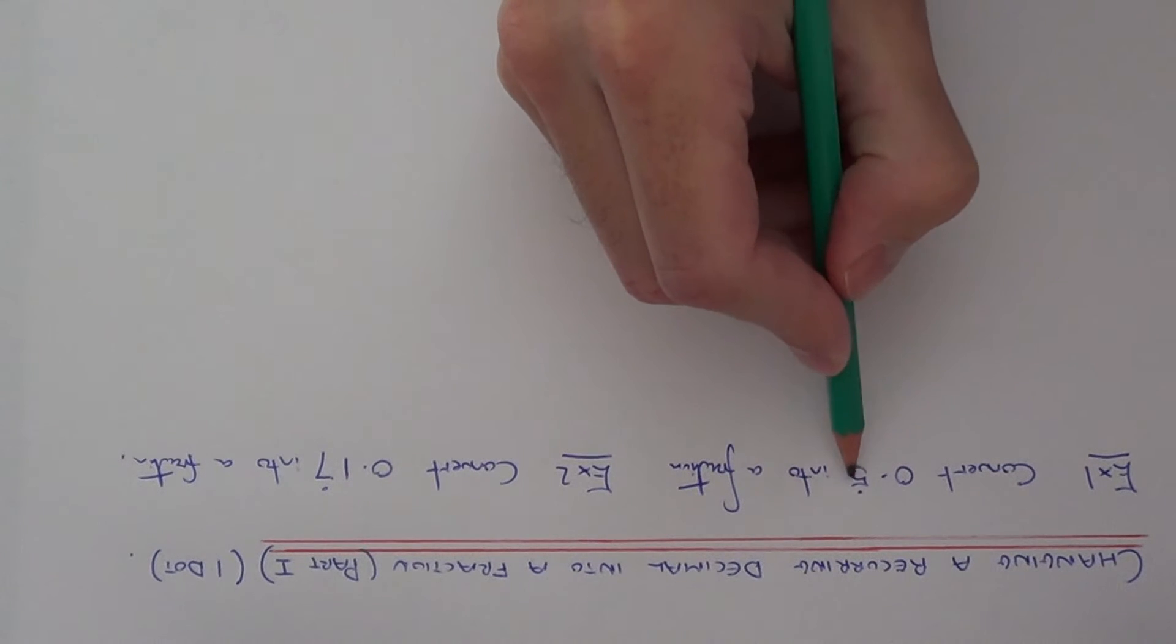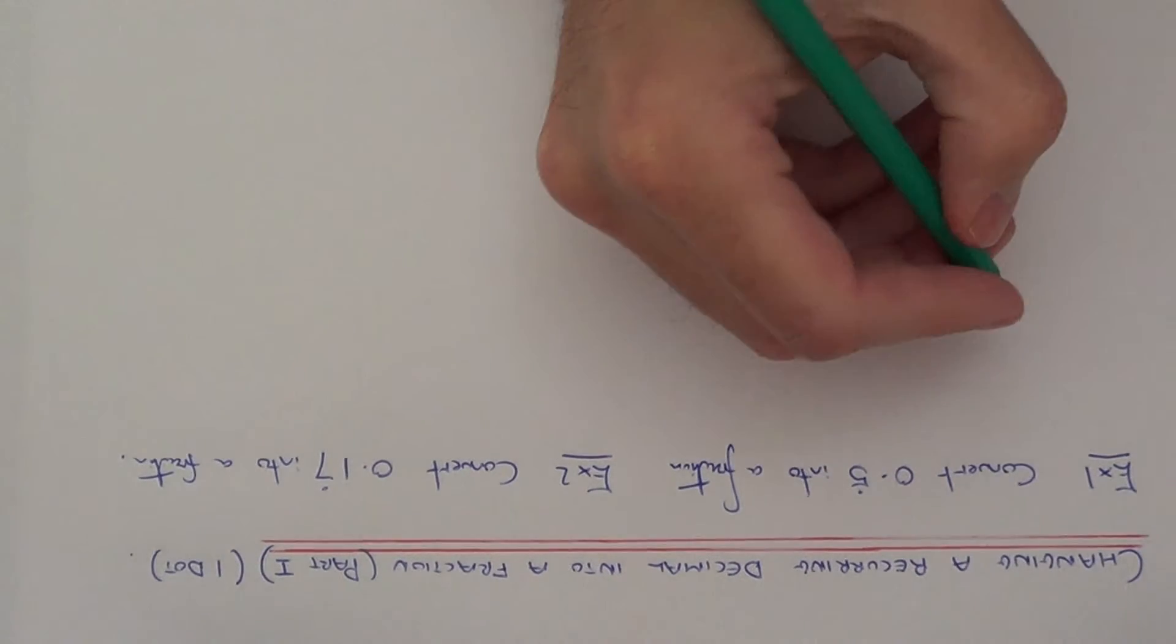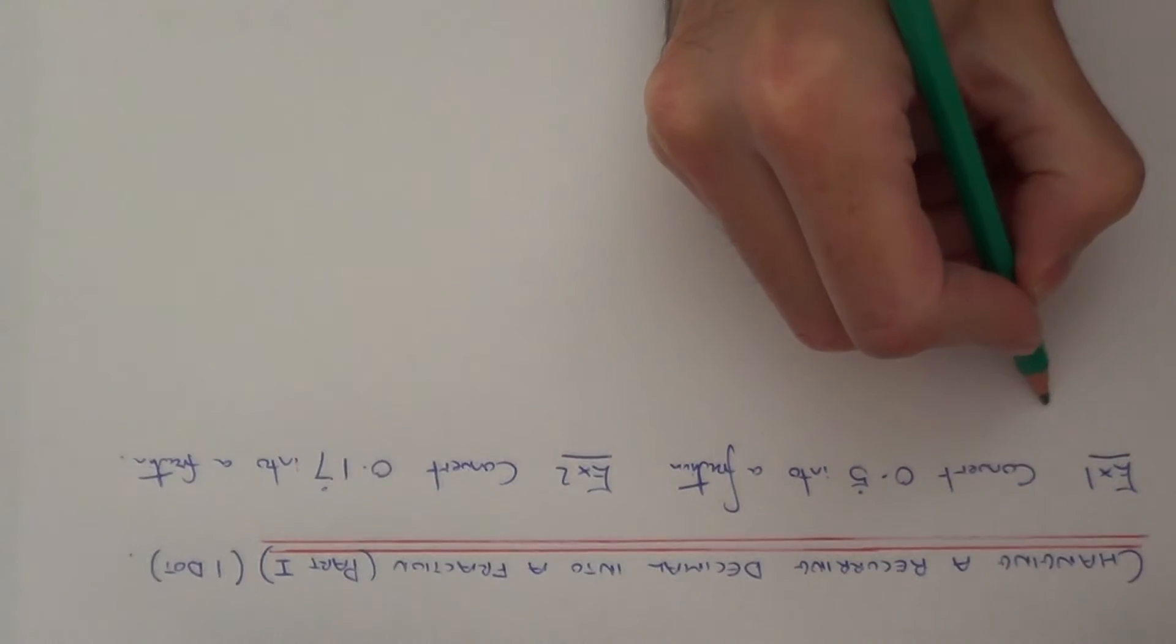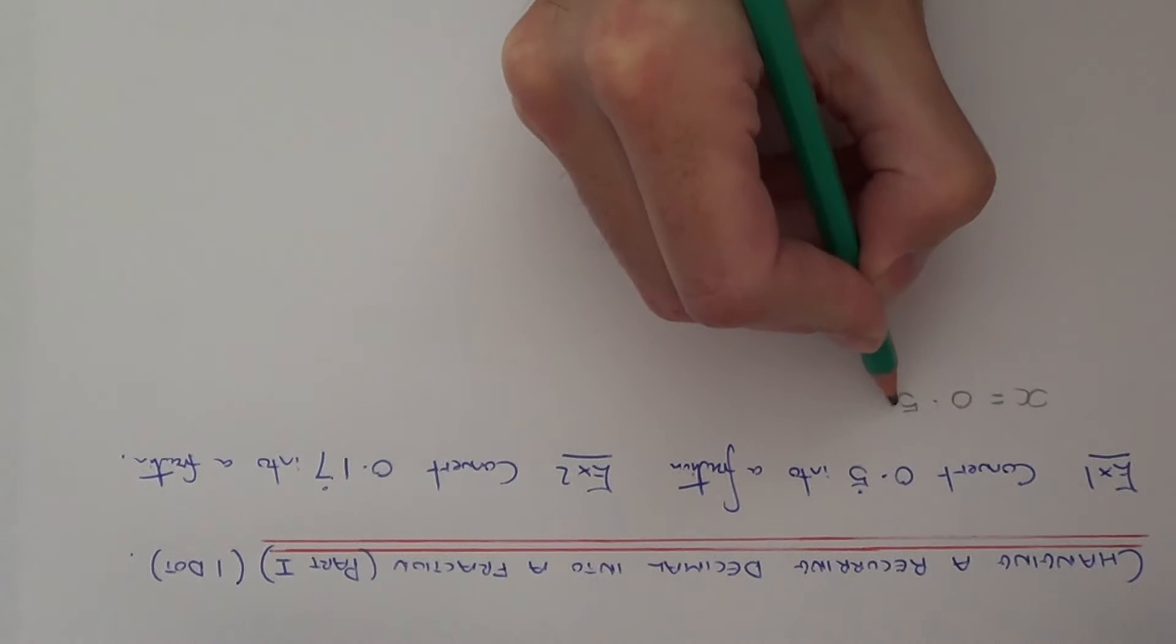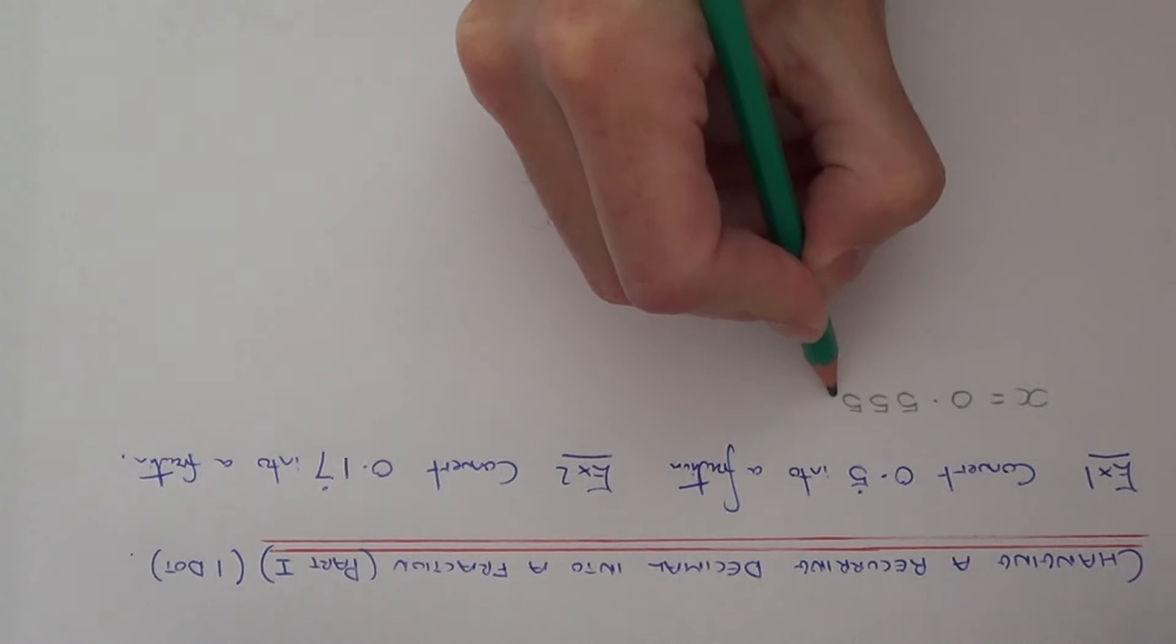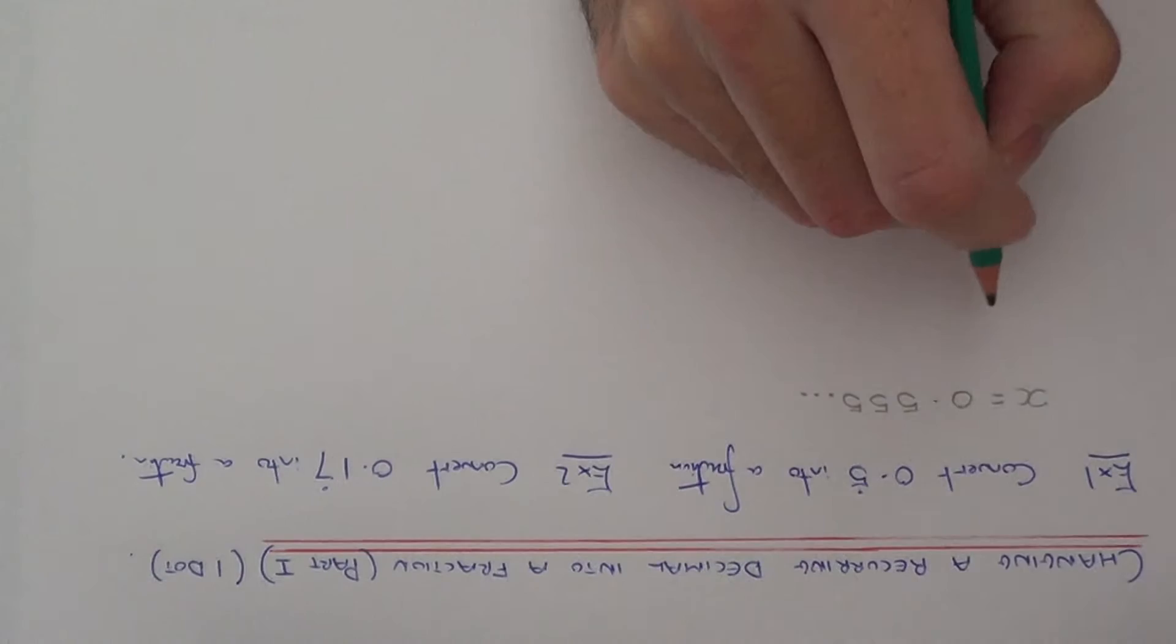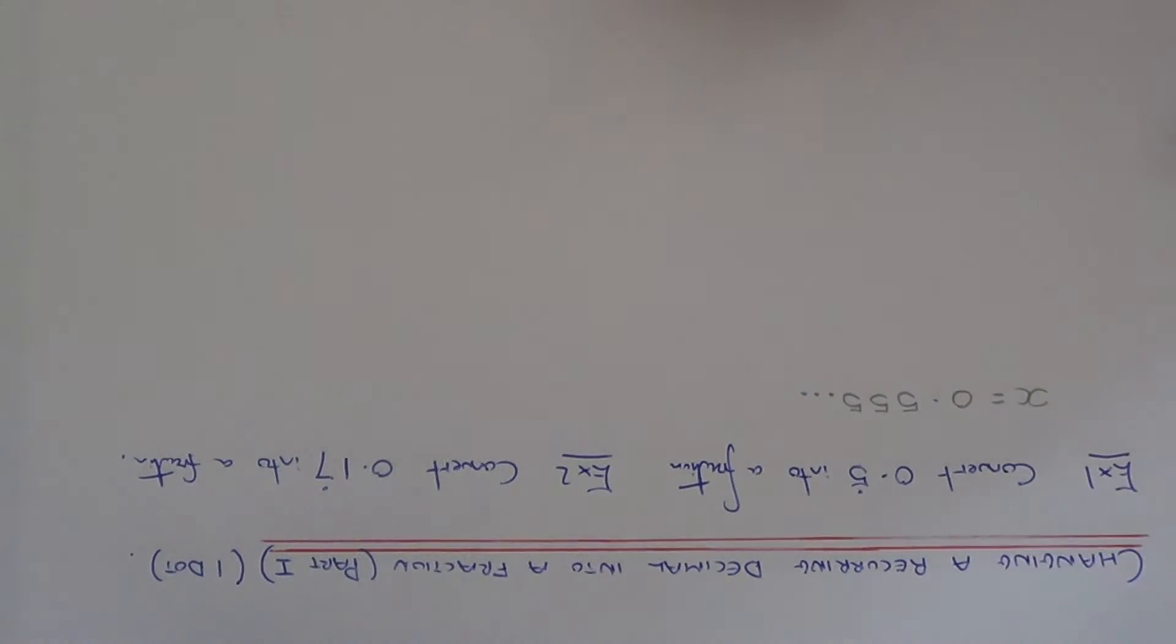The first thing to realize, this dot above the 5 means that this decimal is repeating. So it's 0.55555... The first thing you're going to do is let x equal this recurring decimal. So it's 0.5555 etc. So we've set up an equation here.